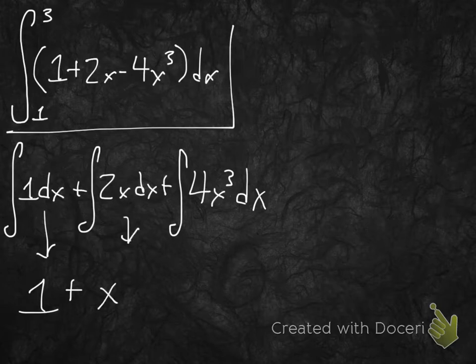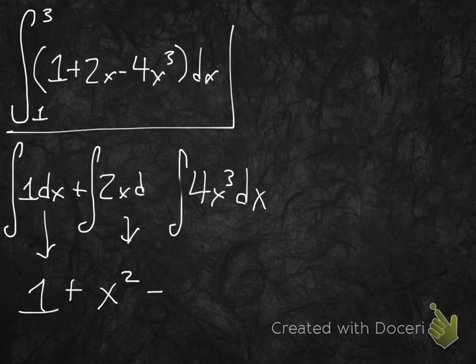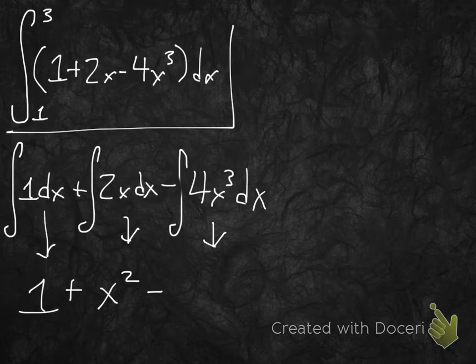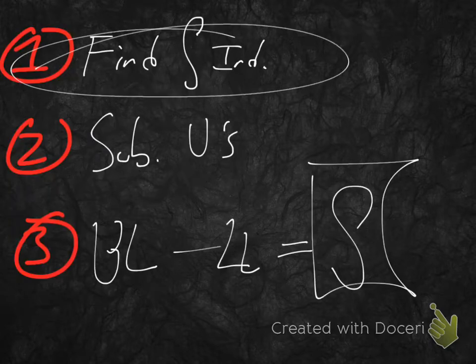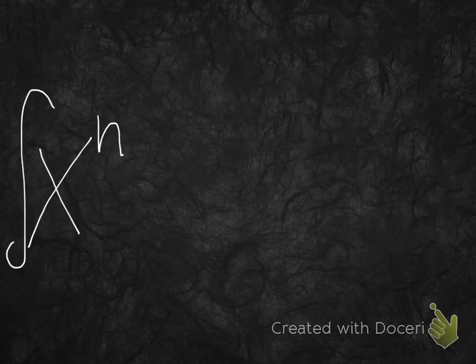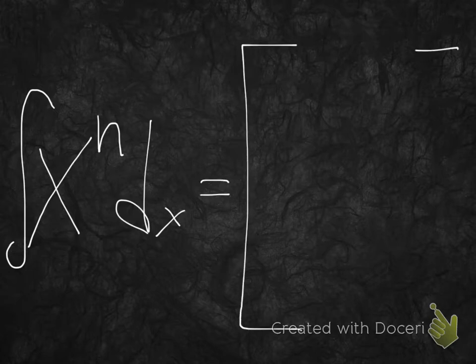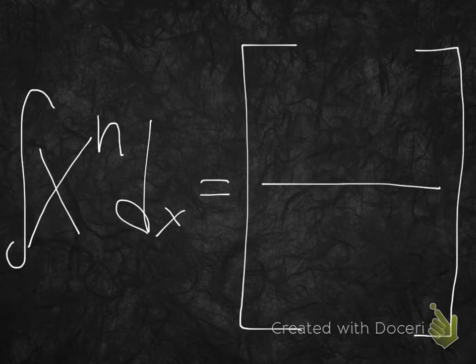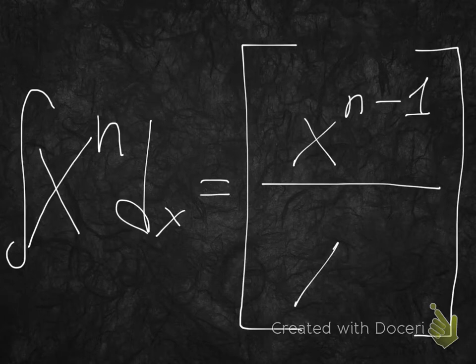Now for the 4x cubed term, let's use the power rule for antiderivatives: the indefinite integral of x to the nth power dx equals x to the n plus 1 over n plus 1. Here n is 3, so we get x to the fourth over 4. With the coefficient of 4 out front, we get 4x to the fourth over 4, and the 4s cancel, giving us just x to the fourth.